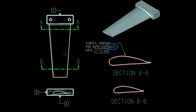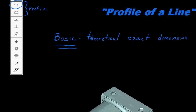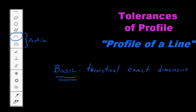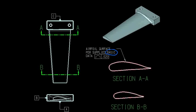Typically for a complex three-dimensional surface part like this, it would be defined by some sort of surface data — a table of points on the drawing, or more commonly today a CAD model, or a data file such as a spreadsheet. In any case there's going to be a series of mathematical data that define points on the surface. The note on the drawing says this airfoil surface is to be per the supplied basic data, and the important word there is 'basic'.